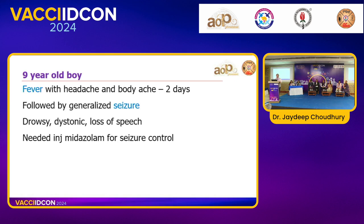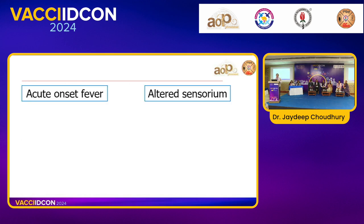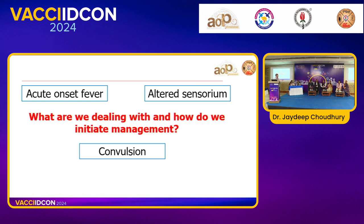The fourth case is a nine-year-old boy with fever, headache, and body ache for two days, followed by generalized seizure, drowsiness, dystonia, and loss of speech. Seizure was controlled by midazolam. This is the classical triad of AES — acute onset fever, altered sensorium, and convulsion. In our endemic setting, JE must be ruled out first, along with rickettsial disease and malaria. History of where the child is coming from, the endemicity of the area, and the monsoon period helps narrow the diagnosis.